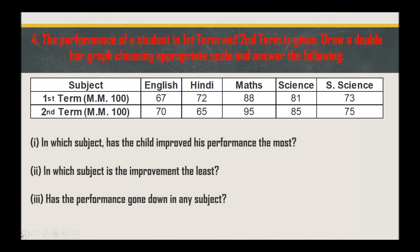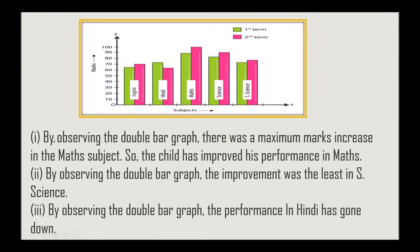The fourth question: the performance of a student in first term and second term is given — draw a double bar graph choosing an appropriate scale and answer the questions. Subjects are English, Hindi, Math, Science, and Social Science, with term one and term two marks out of 100. By observing the double bar graph: the child improved the most in Math; the improvement was least in Social Science; and the performance in Hindi has gone down.